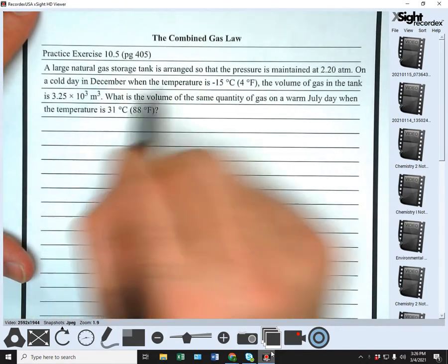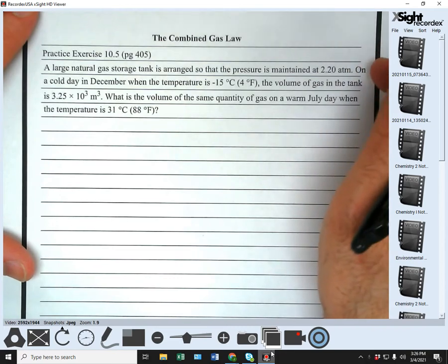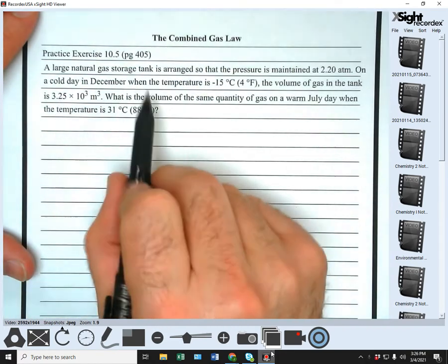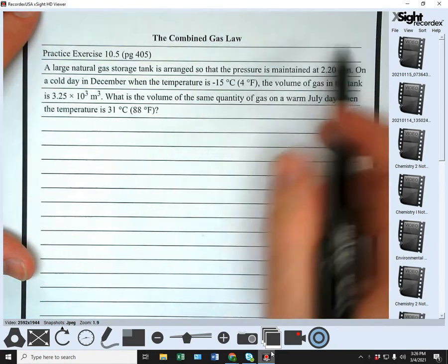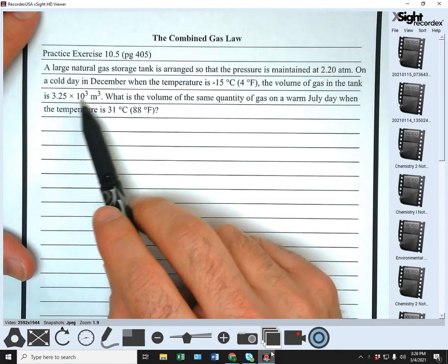A large natural gas storage tank is arranged so the pressure is maintained at 2.20 atm. On a cold day in December, when the temperature is negative 15 degrees Celsius, the volume of gas in the tank is 3.25 times 10 to the third meters cubed.